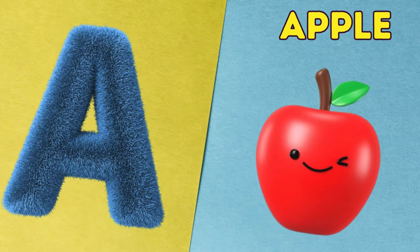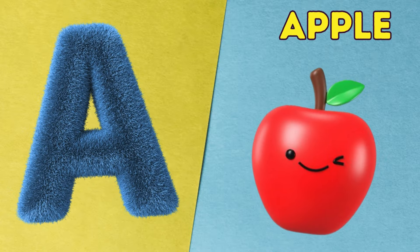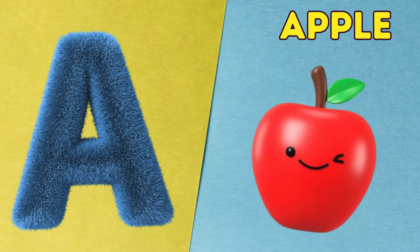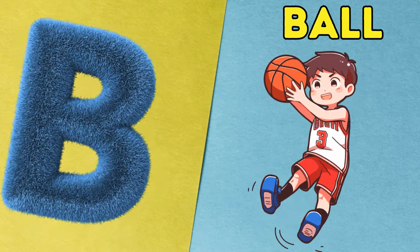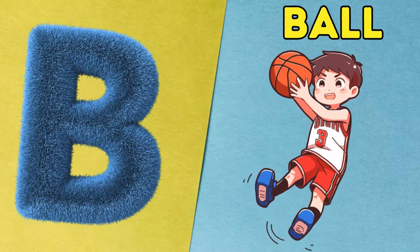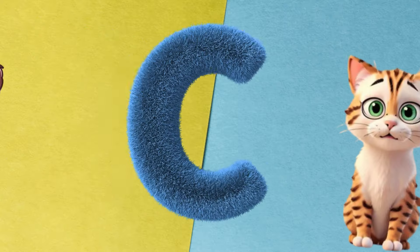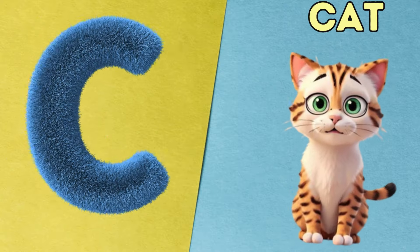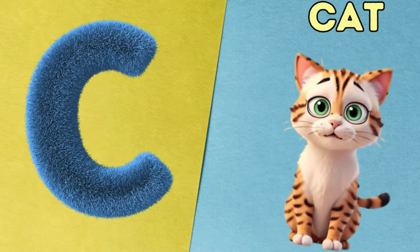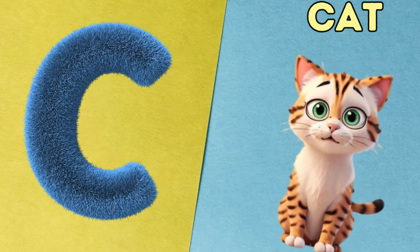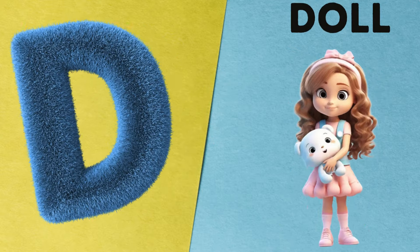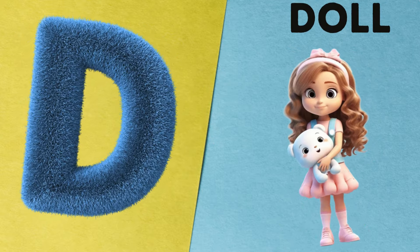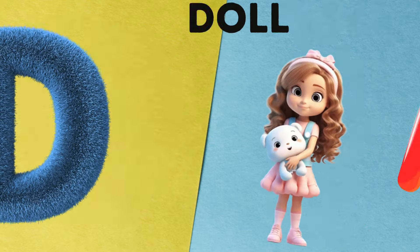A is for apple, a-a-apple. B is for ball, b-b-ball. C is for cat, c-c-cat. D is for doll, d-d-doll.